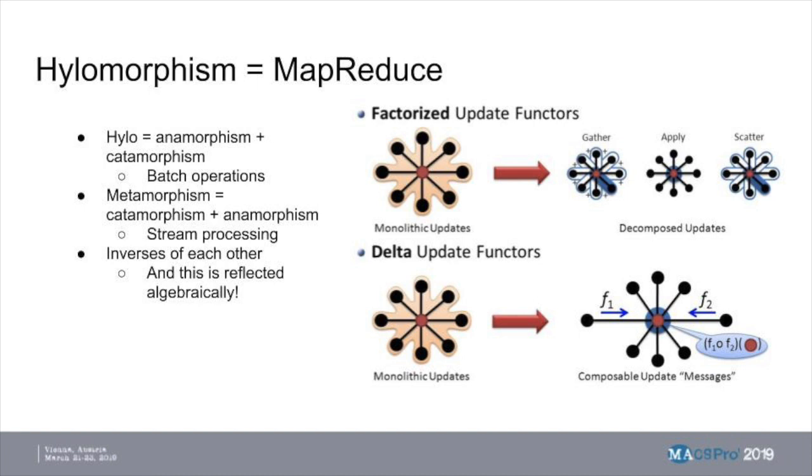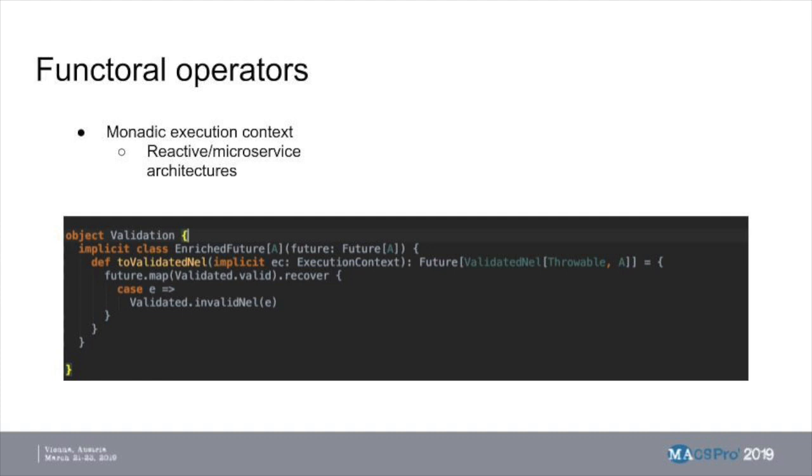Which sounds scarier than it actually is. A functor is the category-theoretic representation of something you might have heard of if you've ever used React before - something called a monad is essentially the same thing.